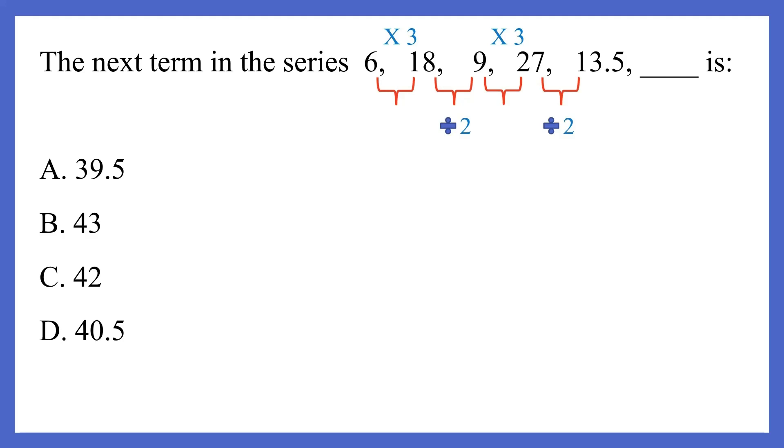So since we just did 27 divided by 2, 13.5, the next term would be 13.5 into 3, which is basically 40.5. So our answer is option D, 40.5.